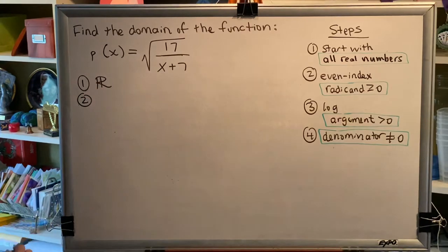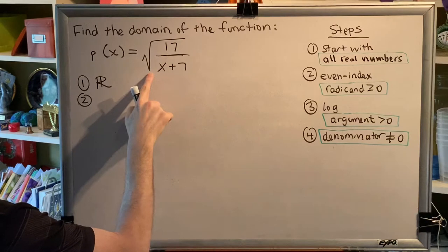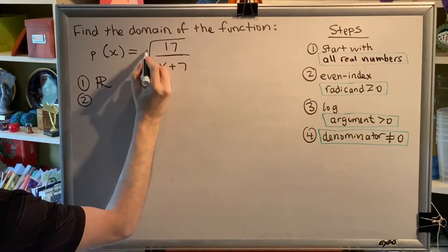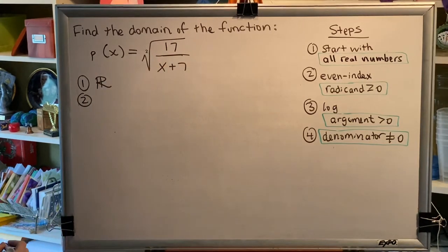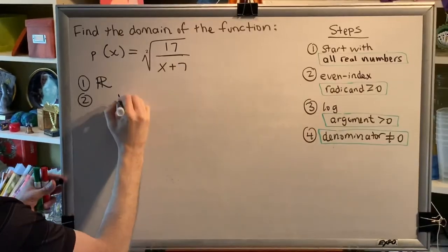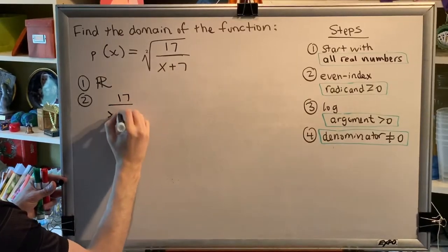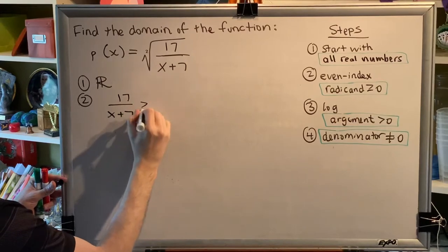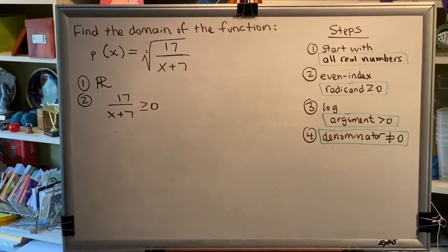Step two, even index radicands greater than or equal to zero. Well, we do have a radical in our problem, and the index, which is the hidden number here, is two, which is even. So anything underneath the radical, which is the entire fraction, has to be greater than or equal to zero. We need to solve this inequality.